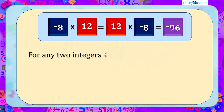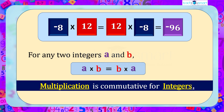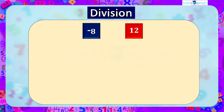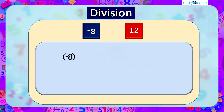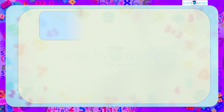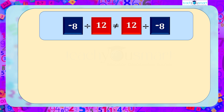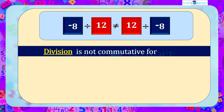For any two integers a and b, a multiplied by b equals b multiplied by a. Therefore, multiplication is commutative for integers. Lastly, let's look at division of integers. On dividing minus 8 by 12, we get minus 2 by 3, and 12 by minus 8 equals minus 3 by 2. That is, minus 8 divided by 12 is not equal to 12 divided by minus 8. Therefore, division is not commutative for integers.